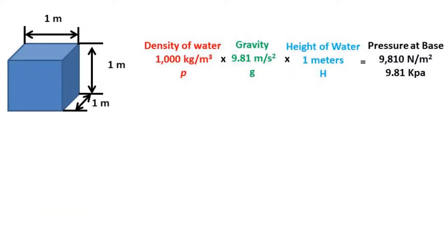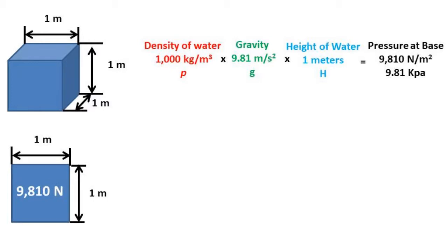So let's first go over how hydrostatic pressure works. If you were to have one meter cubed of water, it would have a pressure of 9,810 newtons per meter squared at its base. We can do this by multiplying the density of water times gravity times the height of the water. This means that the water is exerting the force of 9,810 newtons over the base of one meter squared on the ground.